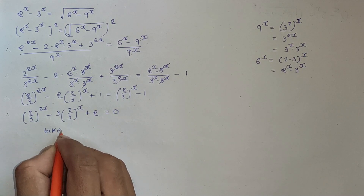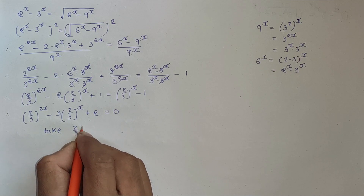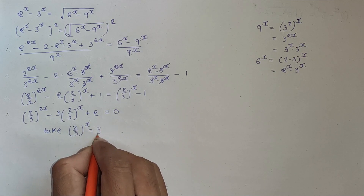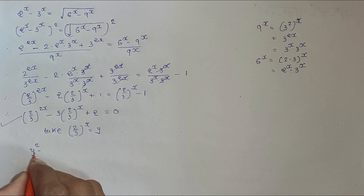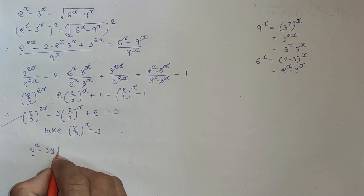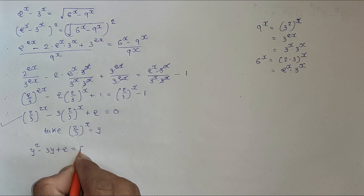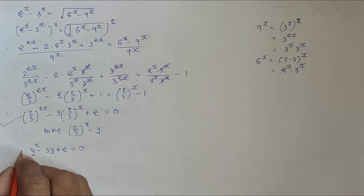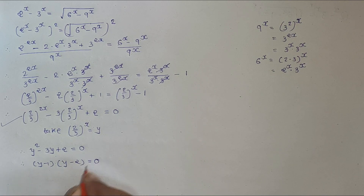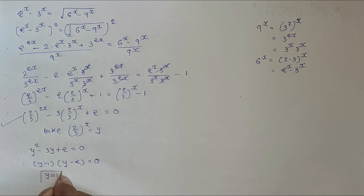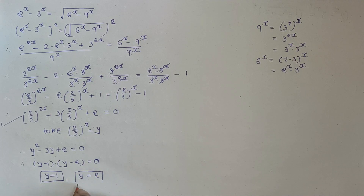Now take y equal to (2/3) to the x. So the equation becomes y squared minus 3y plus 2 equals 0. It factorizes as (y minus 1)(y minus 2) equals 0. So we have y equals 1 and y equals 2.